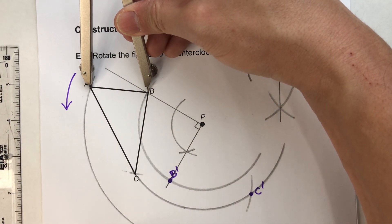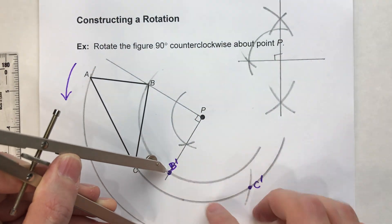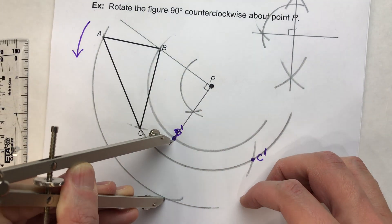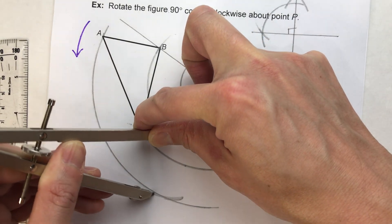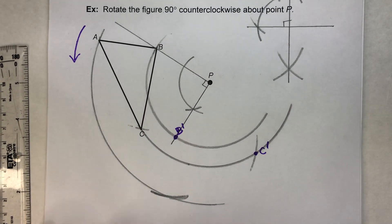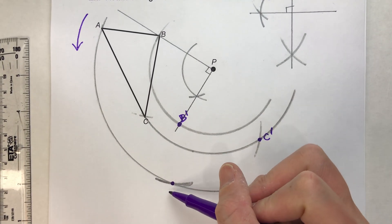So when I repeat this distance off of B prime, I know A is going to be a little bit out in front of this line from P to B. So it's going to be out here somewhere. I think my compass slipped a little bit. There we go. There it is. And where those two arcs intersect, that's my A prime.